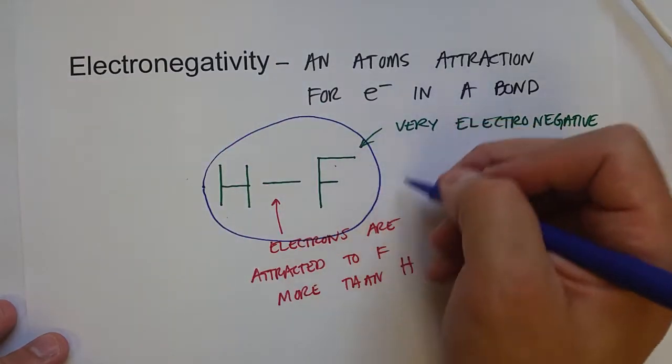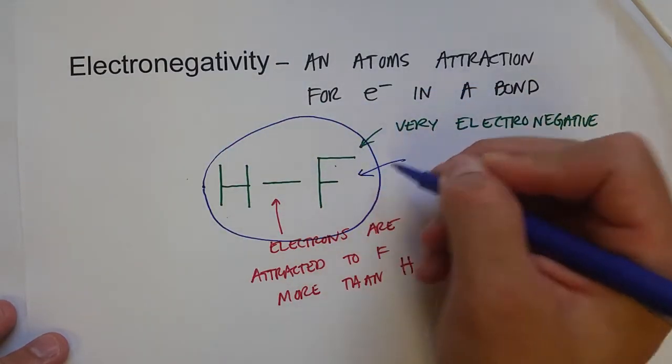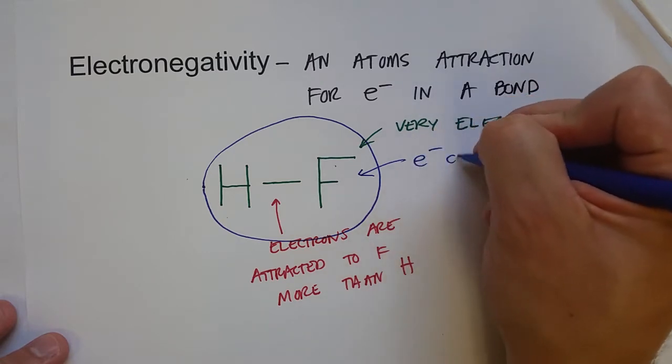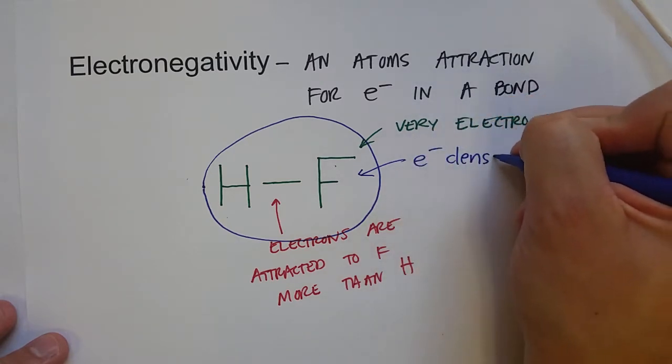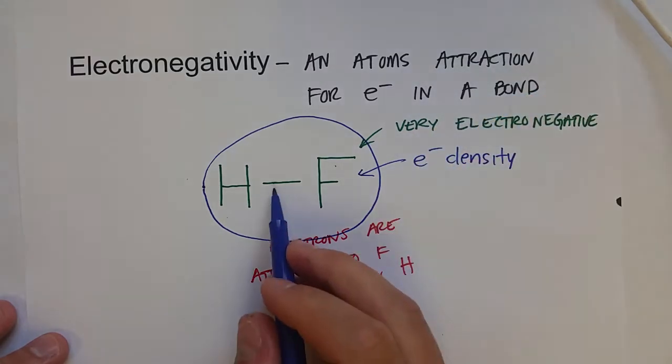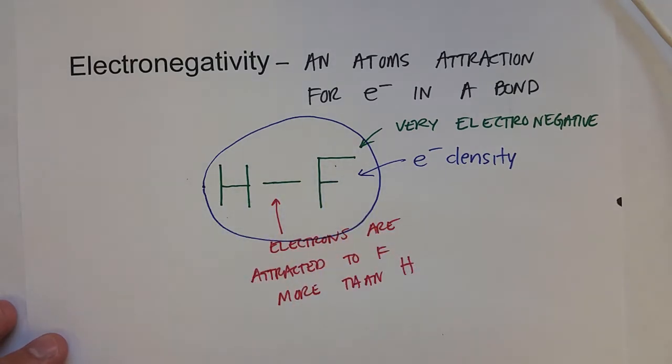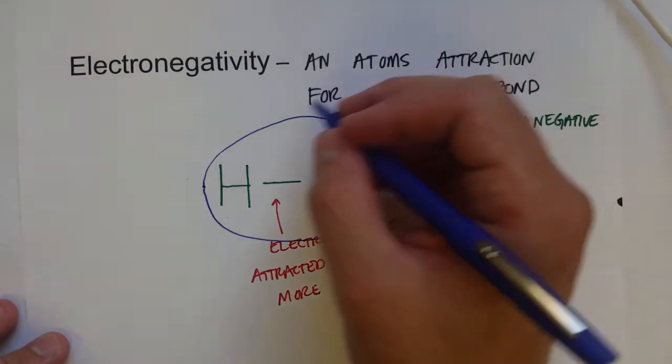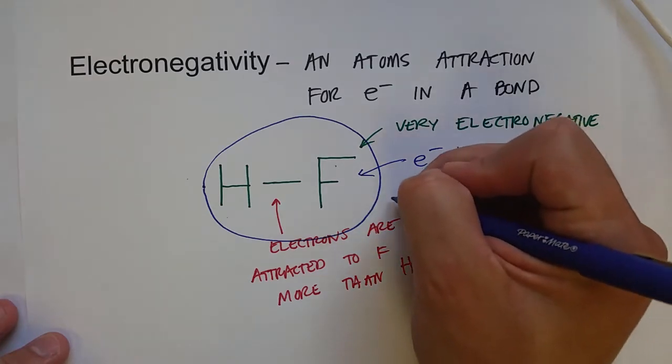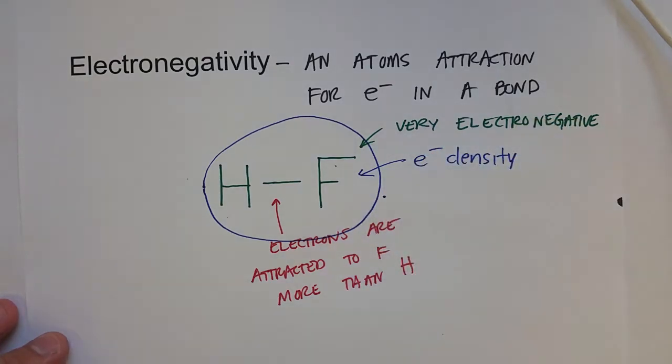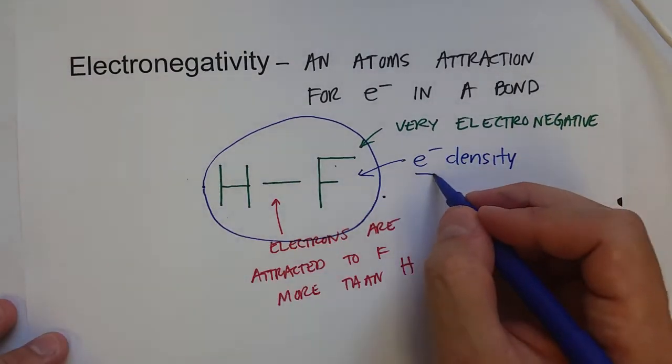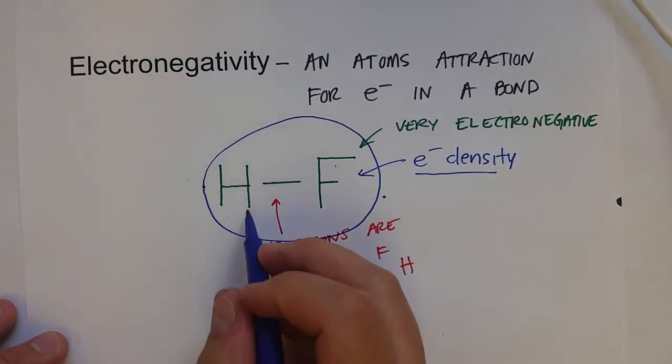Where the area, or the volume of electron density, is much higher around the fluorine atom. Because electrons are attracted to the fluorine atom more, and so they tend to spend more time near the fluorine atom. What this sets up is essentially around this fluorine atom is a net excess of electrons. There's extra electrons around the fluorine atom as opposed to the hydrogen atom.